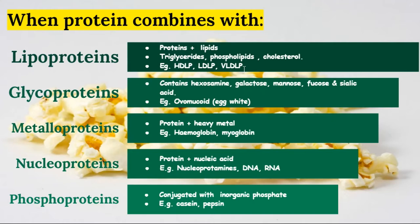Next we have glycoproteins. These contain prosthetic groups including hexosamine, galactose, mannose, fucose, and sialic acid. An example is ovomucoid, which is present in egg white. Glycoproteins are found in mucus secretions of mammals and also function as lubricating agents.